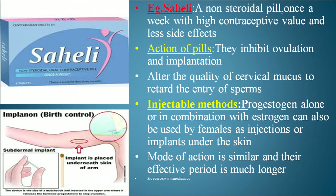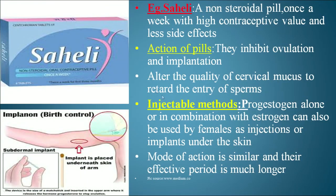Injectable methods use progesterone alone or in combination with estrogen, administered as injections or implants under the skin. Their mode of action is similar to pills, but their effective period is much longer. The second photo shows implants under the brand name Implanon.